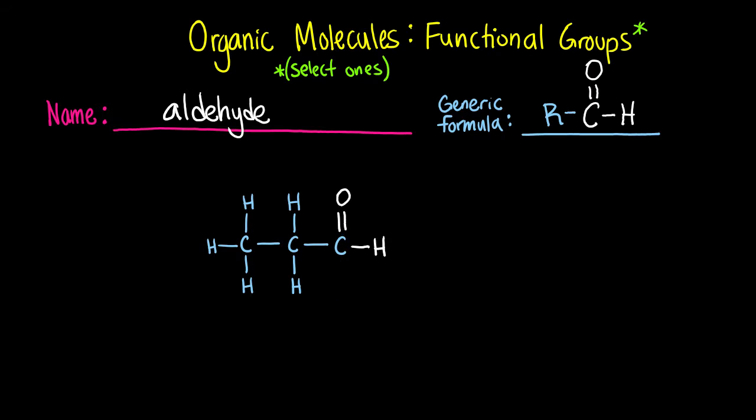This next functional group is called an aldehyde. An aldehyde is a carbon that is double bonded to an oxygen and then has a hydrogen on it in addition to being on the rest of the molecule. This outlines the aldehyde functional group.